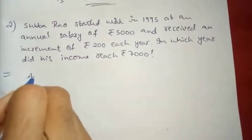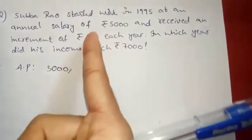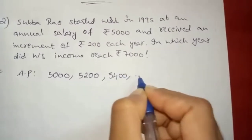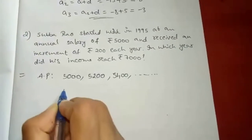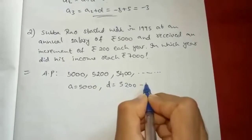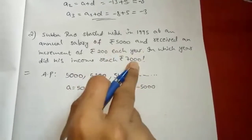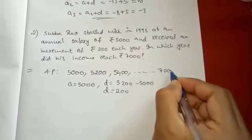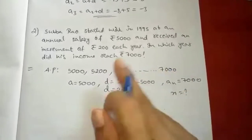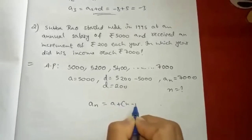So we will write the AP. First it is Rs. 5,000, then it increased by Rs. 200 — so Rs. 5,200, then Rs. 5,400, and it goes on like this. Here A is Rs. 5,000. D is second term minus first term: 5,200 minus 5,000 equals 200. So D is 200. At the end, the salary is 7,000, so AN equals to 7,000. We have to find N. Use the nth term formula: AN equals A plus (N minus 1) into D.